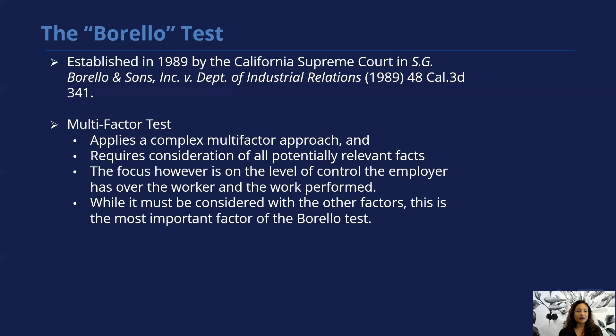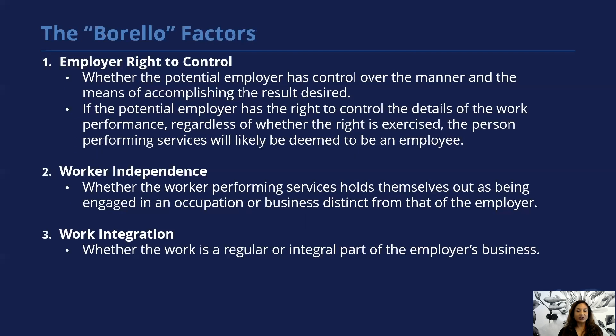We now get into what are the Borrello factors. I have 13 factors. The first one is the employer right to control — whether the potential employer has control over the manner and means of accomplishing the results desired. This basically turns on how much or how significant the employer's control is on how the work is done.